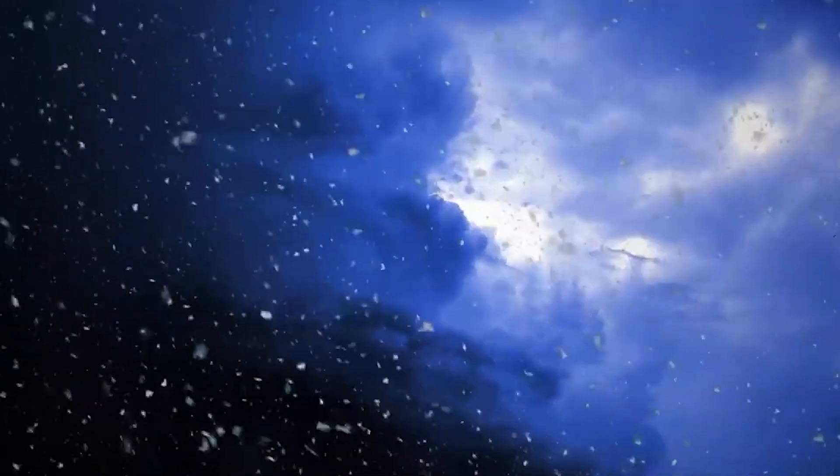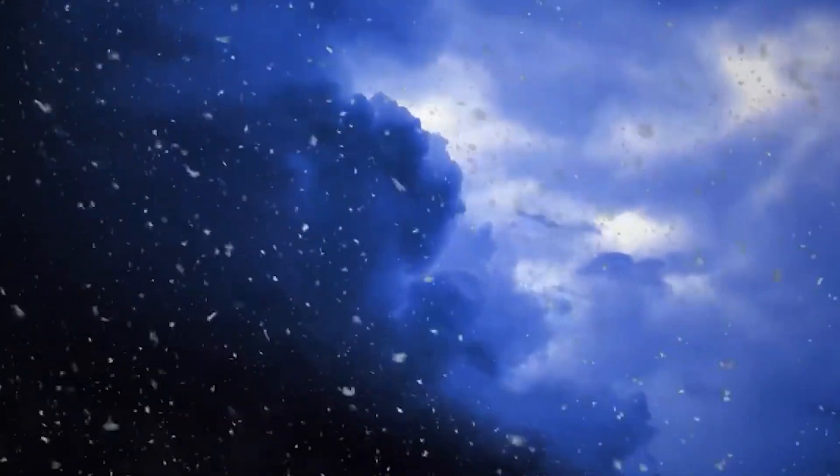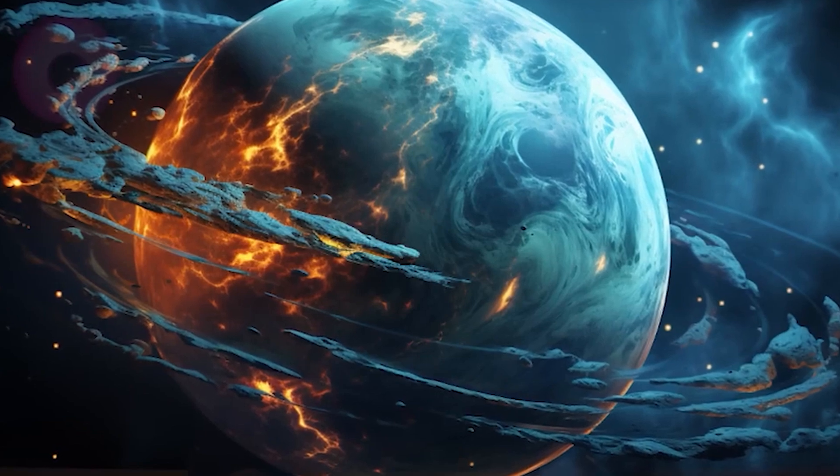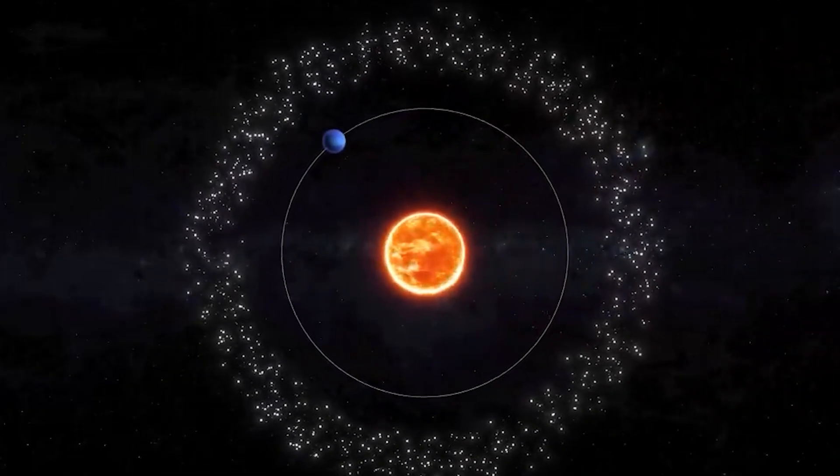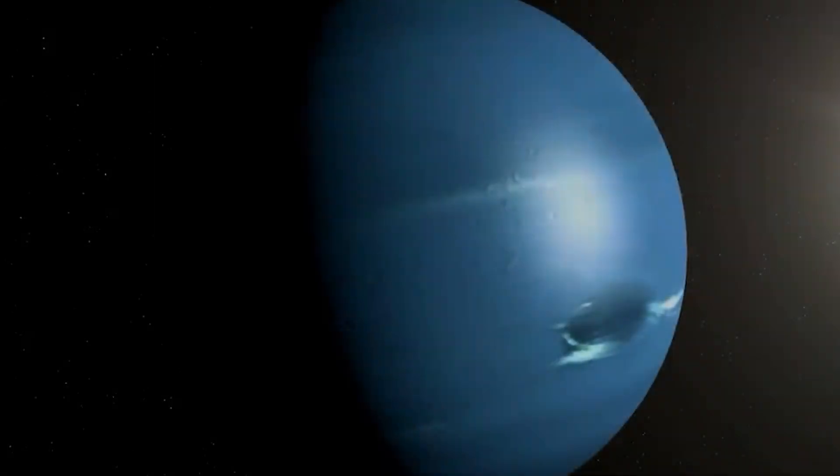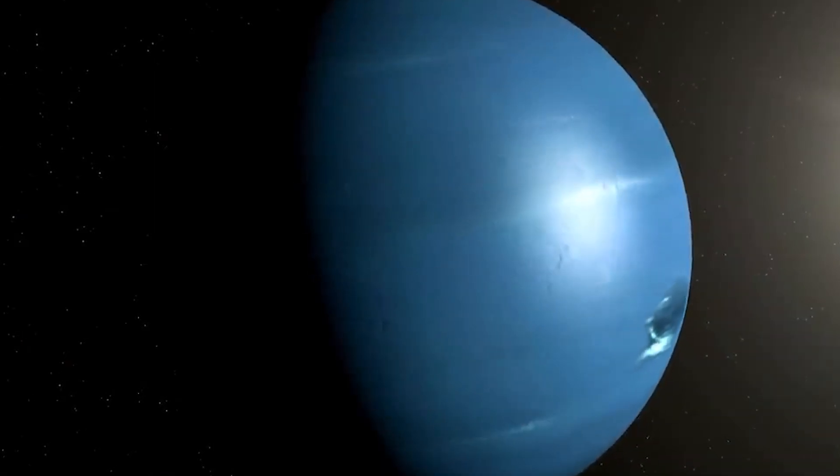Another theory is that Neptune may have collided with a large cosmic object in the distant past, releasing enormous energy still detectable today. Neptune emits nearly three times more energy than it receives from the sun. This energy output is one of the planet's biggest mysteries.